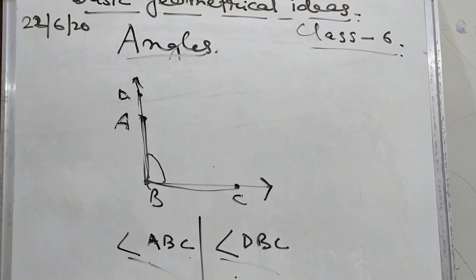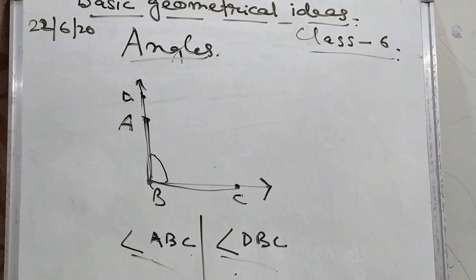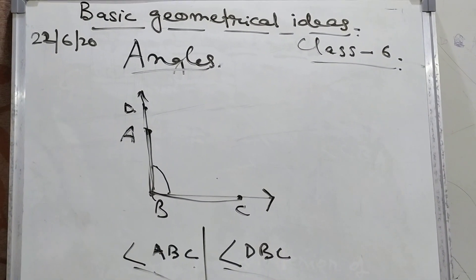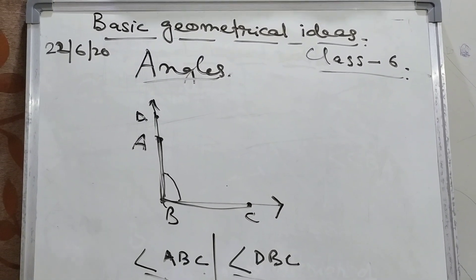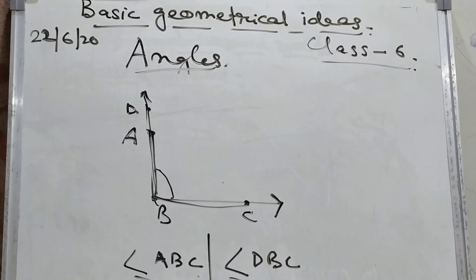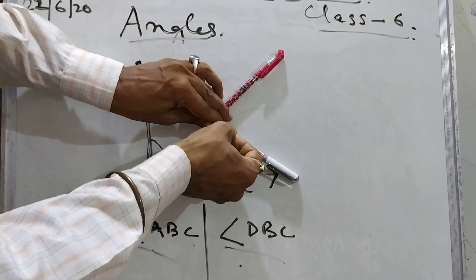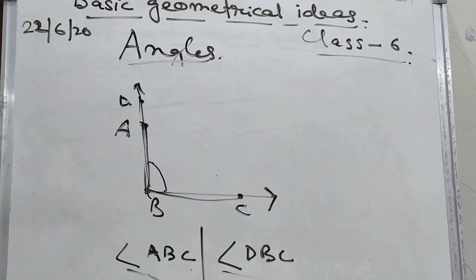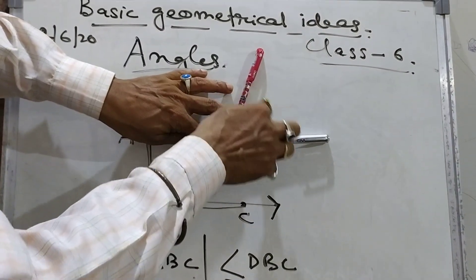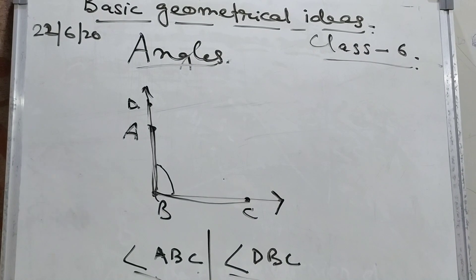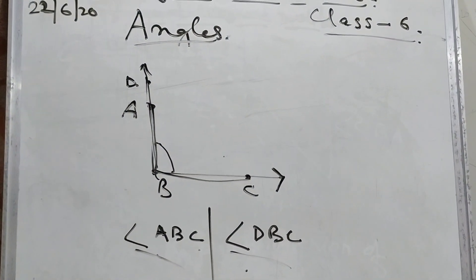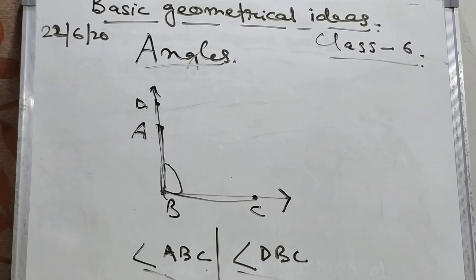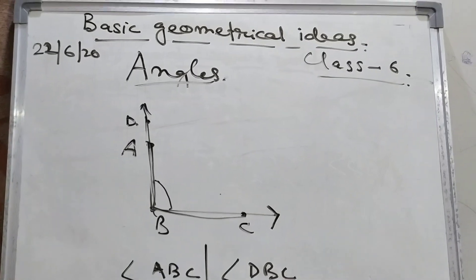So students, you have understood how we represent angles. Please go through the video properly, and if you have any doubts, let me know — I will try to make it more simple. An angle is nothing but the inclination of the arms. How those two lines are inclined to each other, that is called an angle. Hope students you have understood this, and how we name the angle, that also you have understood. Thank you and have a nice day.